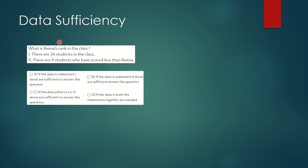If we look at just the first statement, we won't be able to answer what is asked. The second statement says there are nine students who scored less than Rina, but by this fact alone we can't determine Rina's rank either. If we merge both statements — there are 26 students total and nine are below Rina — Rina's position is 10th from the last, meaning 16 students scored above her, making her rank 17th. Both statements are necessary, so option D is the answer.